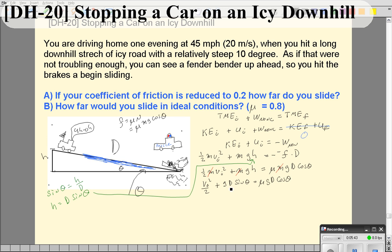We're now left with v naught squared over 2 plus g d sine theta equals mu g d cosine theta. I'm going to bring this over here, so we get v naught squared over 2 equals mu g d times cosine theta minus mu g d times sine theta. I subtracted this over and then factored out the g d from both sides.